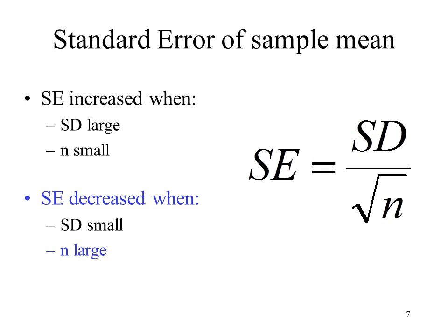Here is the standard error formula: the standard deviation divided by the square root of the sample size. What we've been doing is increasing the sample size — increasing the number we're dividing by — which has shown that the standard error decreases when n, or the sample size, is large. You can also decrease the standard error if the standard deviation is small, meaning the observations don't vary as much. On the other hand, the standard error increases when there is large variability in your sample — a large standard deviation — or if you have a small sample size.